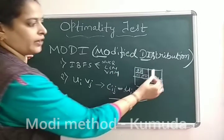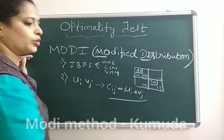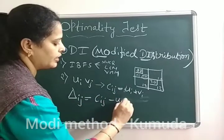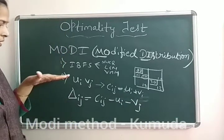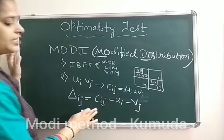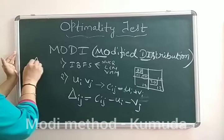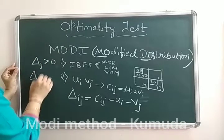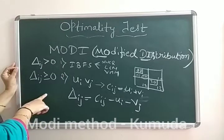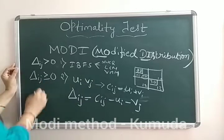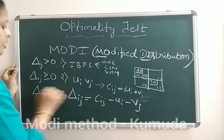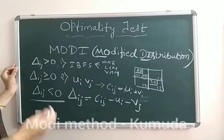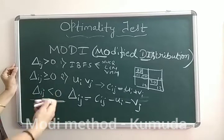For an unoccupied cell we calculate something called delta IJ, found as Cij minus UI minus VJ. Once we calculate delta IJ, we get three conditions: if delta IJ is greater than 0, we have a unique optimal solution; if delta IJ is greater than or equal to 0, we still have the optimum solution but an alternate solution may exist; and if delta IJ is less than 0, we must improve the TTC, as any negative value means we need to find a better solution.